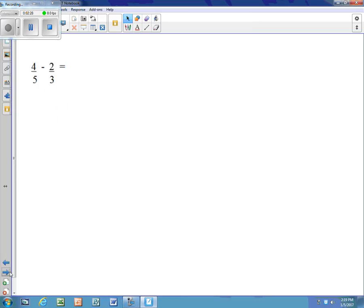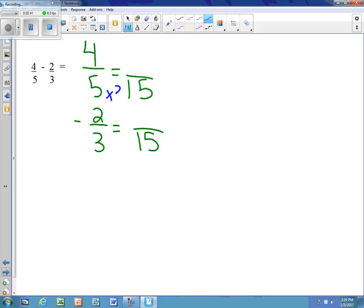4/5 minus 2/3. We're going to rewrite vertically. So we look through these two, and we know that 5 times 3 is 15. 4 times 3 is 12. 3 times 5 is 15. 2 times 5 is 10. 12/15 minus 10/15 is 2/15.